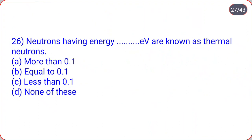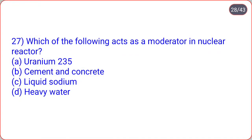Neutrons having energy dot-dot electron volt are known as thermal neutrons. Options are more than 0.1 eV, equal to 0.1 eV, less than 0.1 eV, none of these. Correct option is option C, less than 0.1 electron volt; such neutrons are called thermal neutrons.